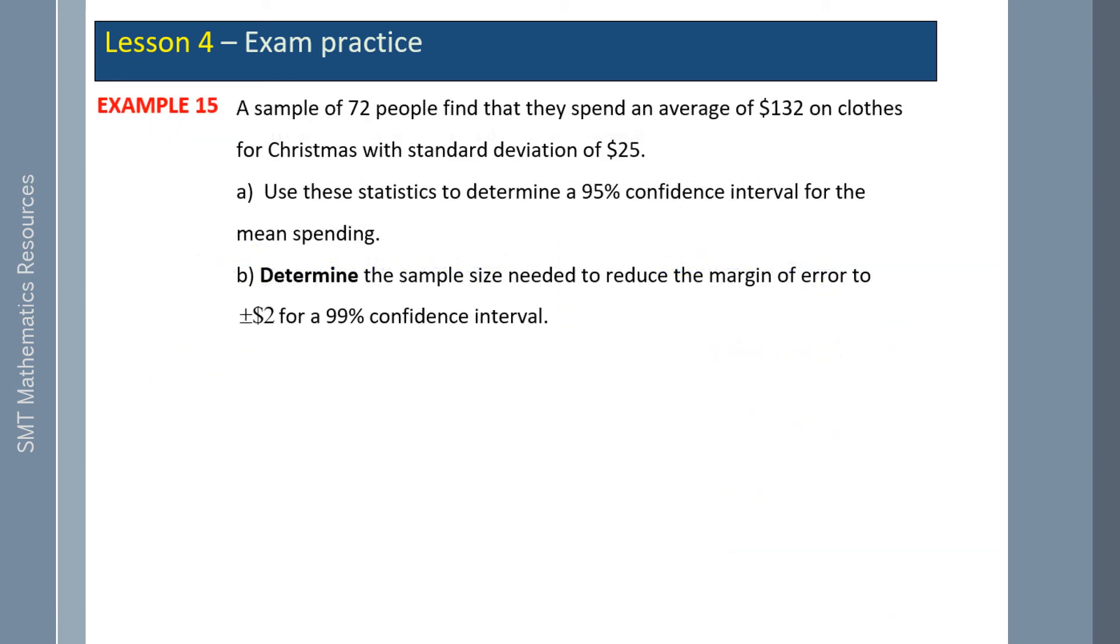Example 15: A sample of 72 people find that they spend an average of $132 on clothes for Christmas with a standard deviation of 25. Use these statistics to determine a 95 percent confidence interval for the mean spending. So our sample standard deviation is 25 divided by the square root of n, which is 72. Evaluating that, it's 2.946. The mean of our sample is $132.